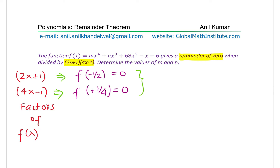That should give us two equations and we have two unknowns. So this will lead to two equations which can help us solve for the two unknowns, M and N. That is the concept — let us substitute and find the values.